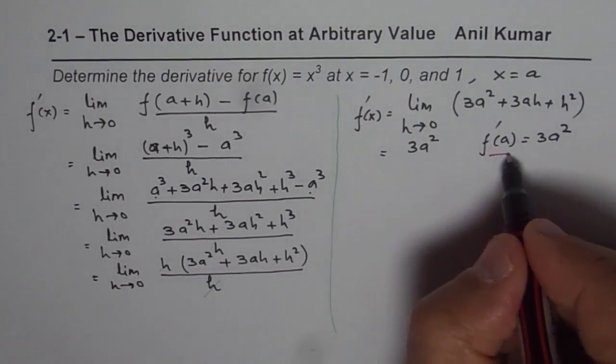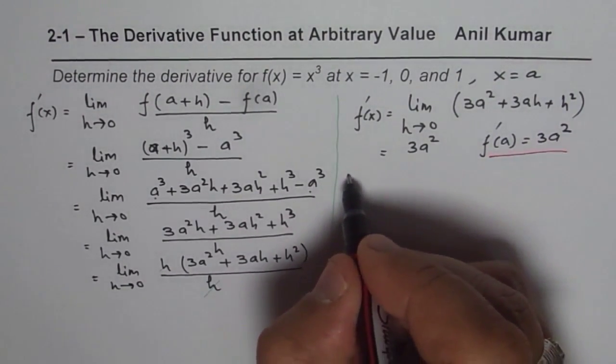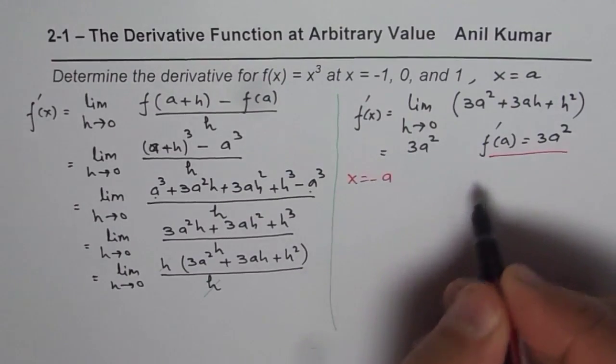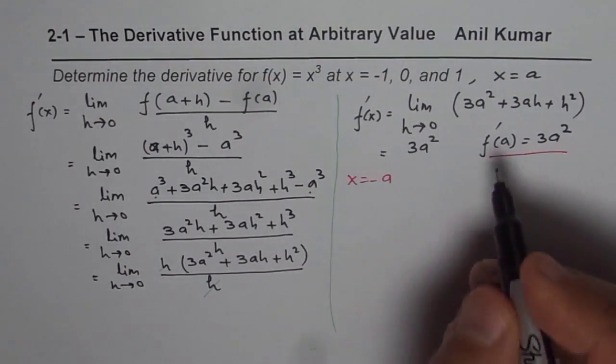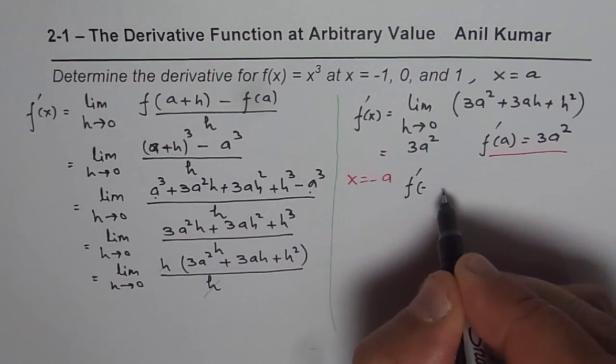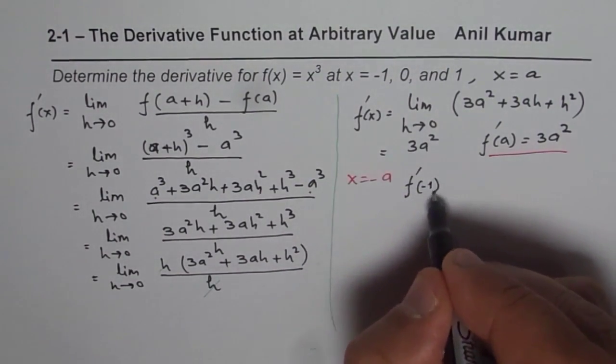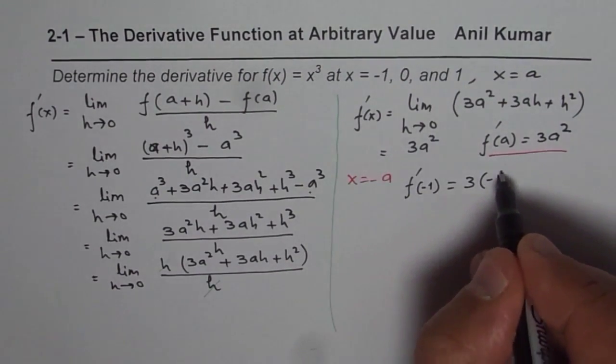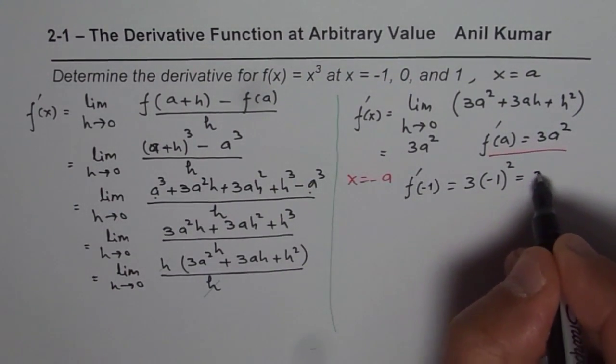So let us now find different values. If x = -1, what is the value? We substitute -1 here. So we get f'(-1) = 3(-1)² = 3.